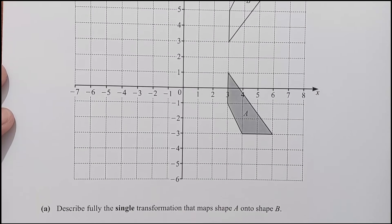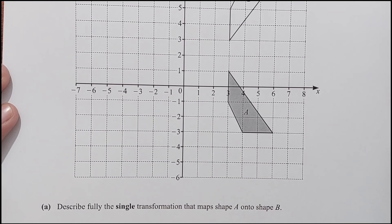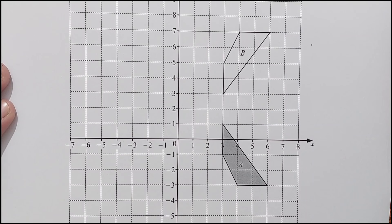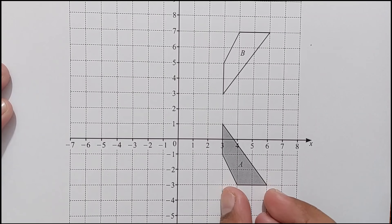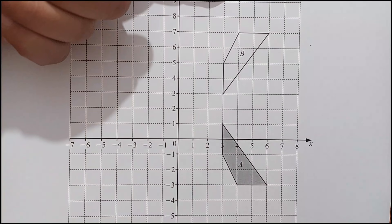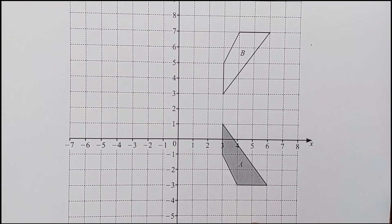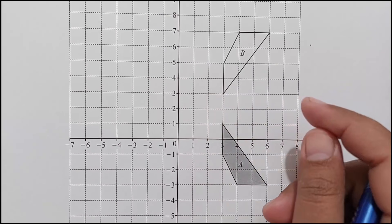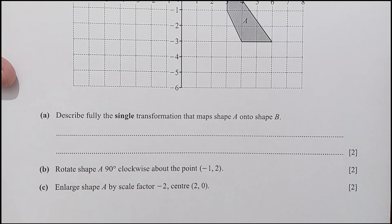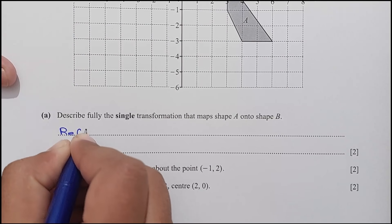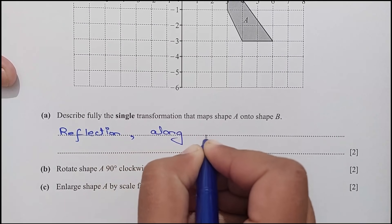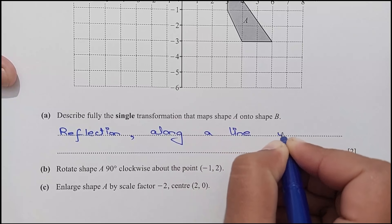Question number 10, part A: describe fully the single transformation that maps shape A onto shape B. Looking at the diagram, this is a reflection along the line y equals 2.